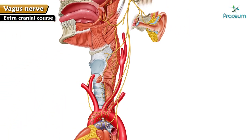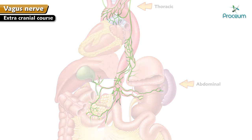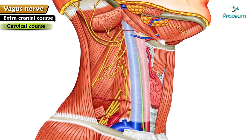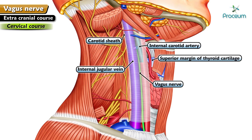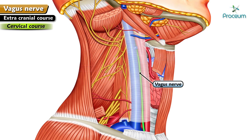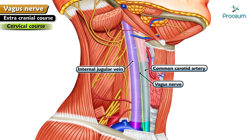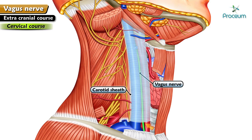The extracranial course of the vagus is divided into three parts: cervical, thoracic, and abdominal. In the neck, the vagus nerve is present as a content of the carotid sheath, in between the internal carotid artery and internal jugular vein up to the level of the superior margin of the thyroid cartilage. Below this level, it lies between the common carotid artery and internal jugular vein, before coming out of the carotid sheath at the root of the neck.